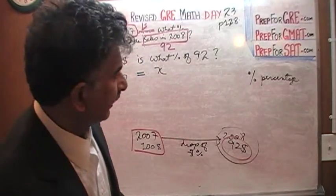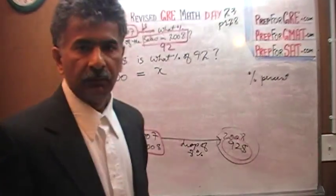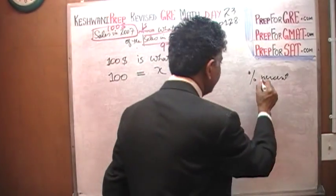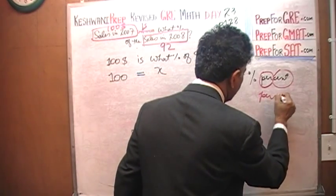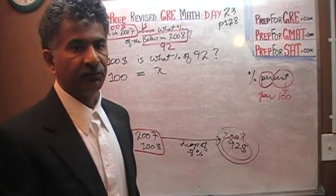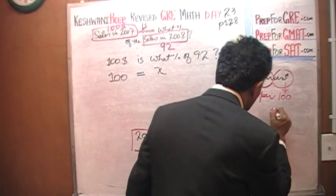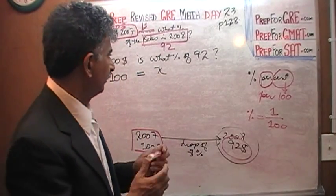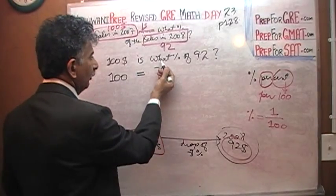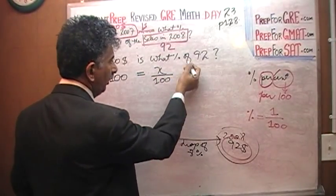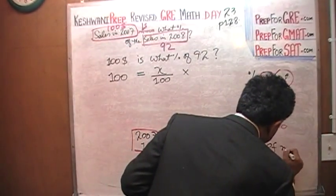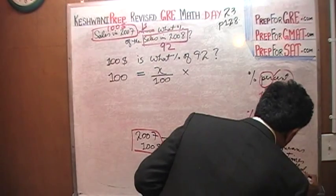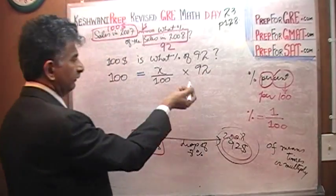Percent means exactly what it says — per 100. That is where the word 'cent' and 'century' come from. Per 100 is translated as 1 over 100, so percent means divided by 100. And 'of' means times. So the equation is: 100 = X over 100, times 92. We just have to solve for X.